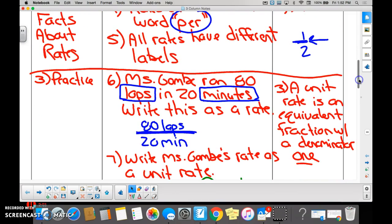All rates have different labels. We've already talked about that. And here's our example. Miss Gamby ran 80 laps in 20 minutes. Right? This is a rate. We know this can be a rate because we have a label of laps and we have a label of minutes.